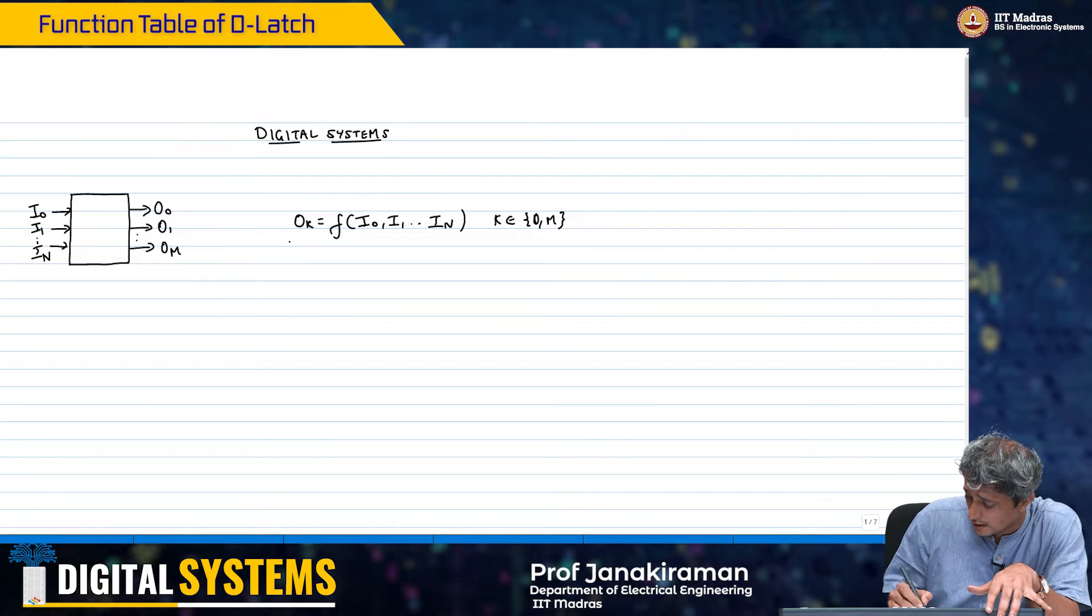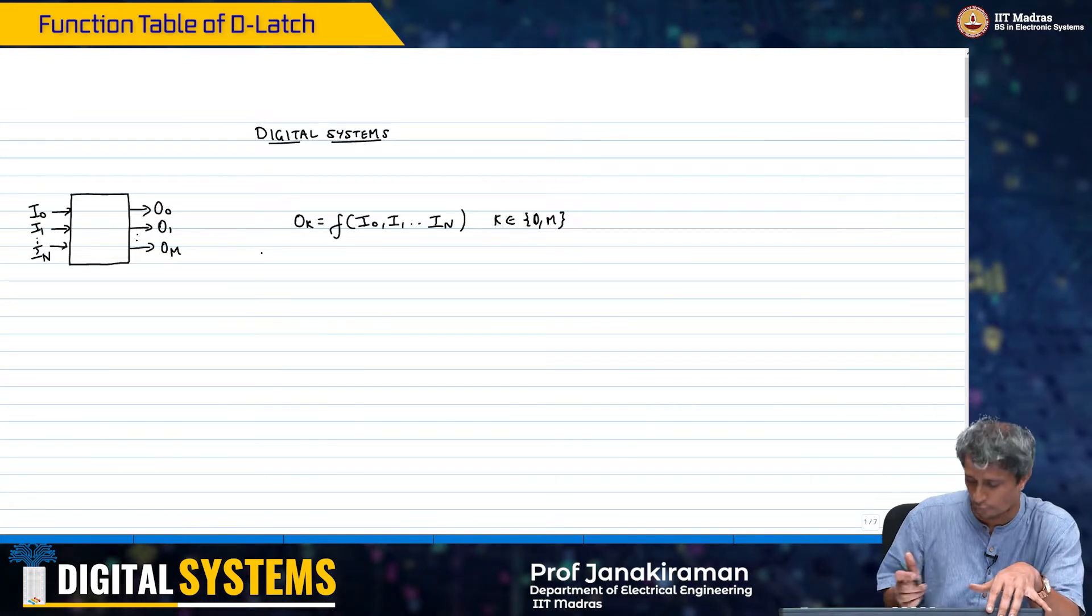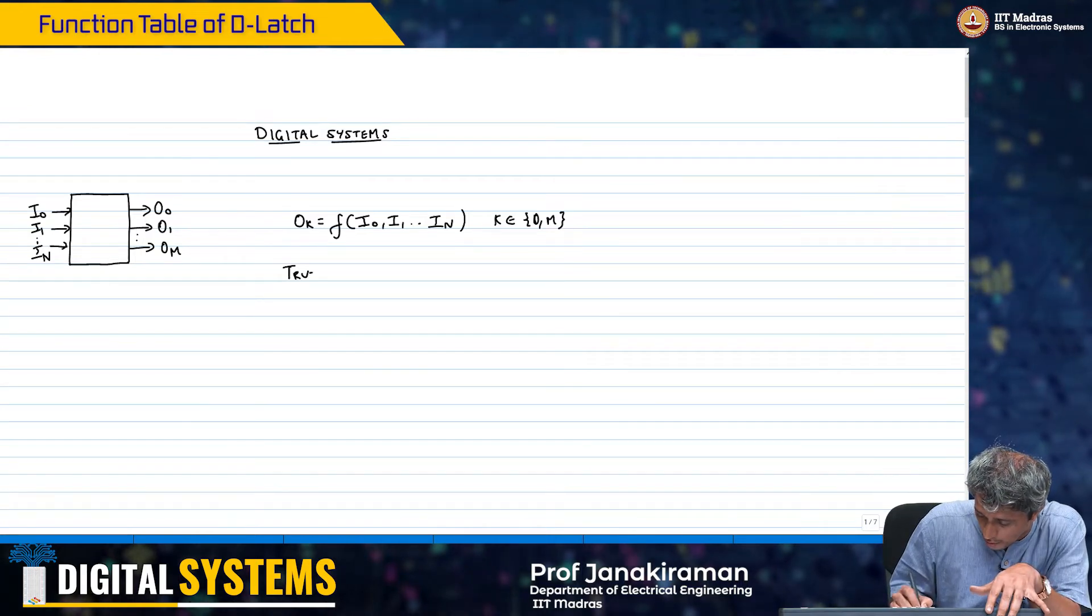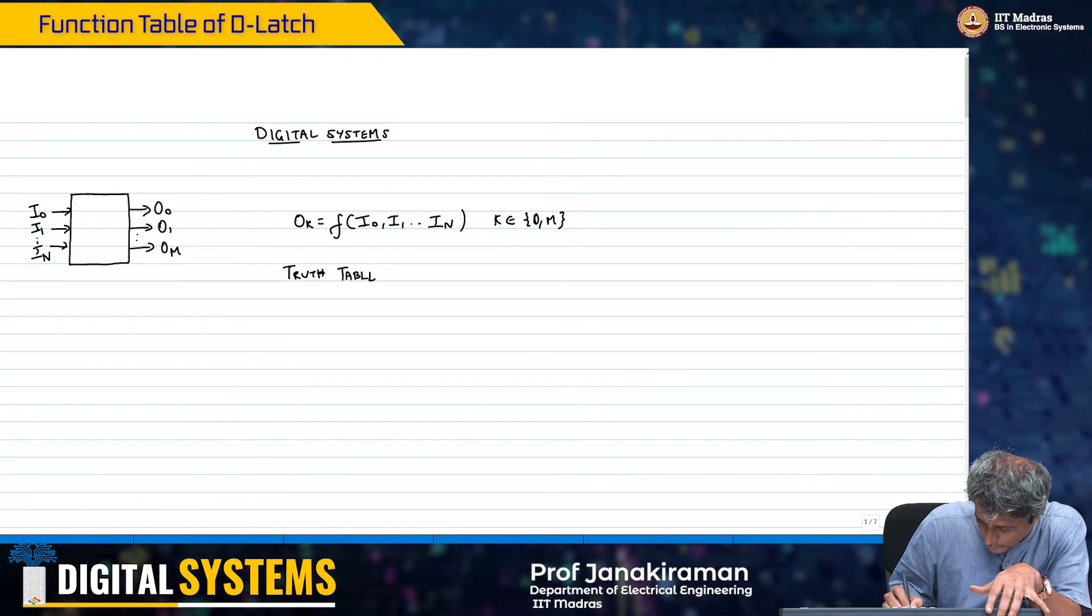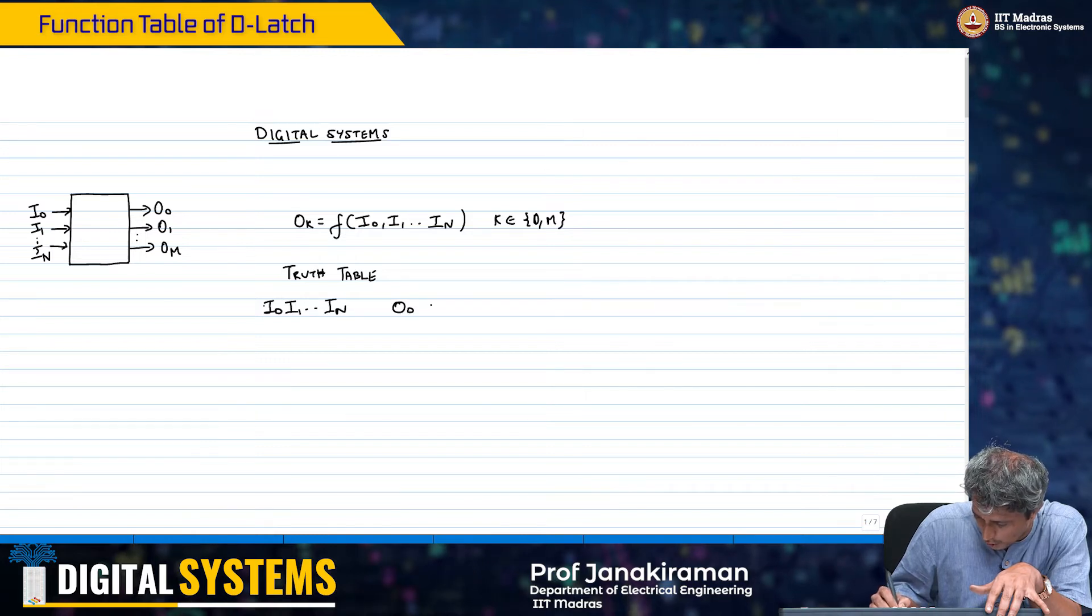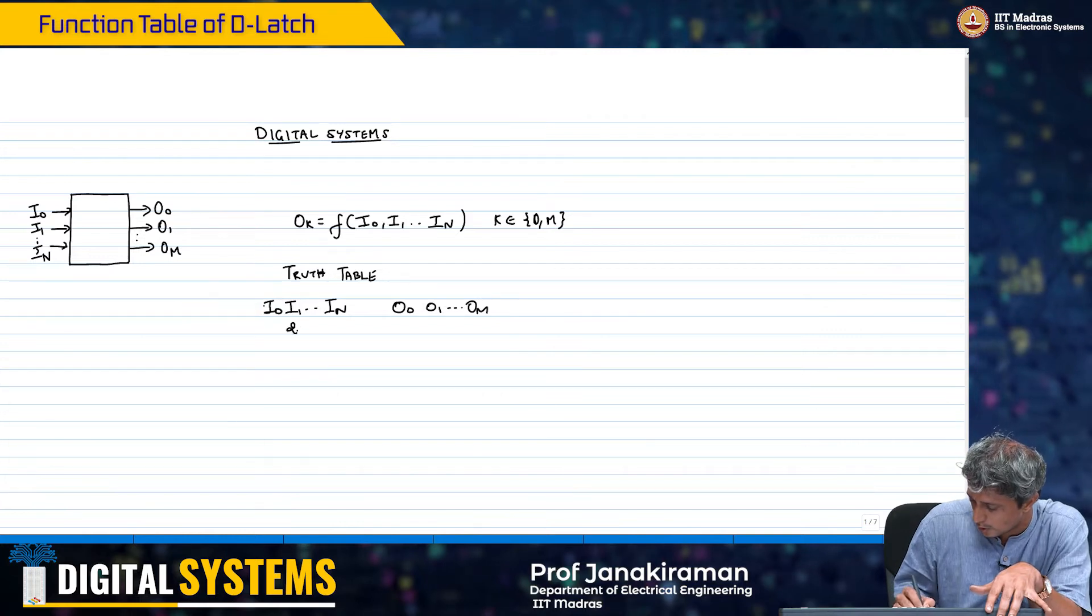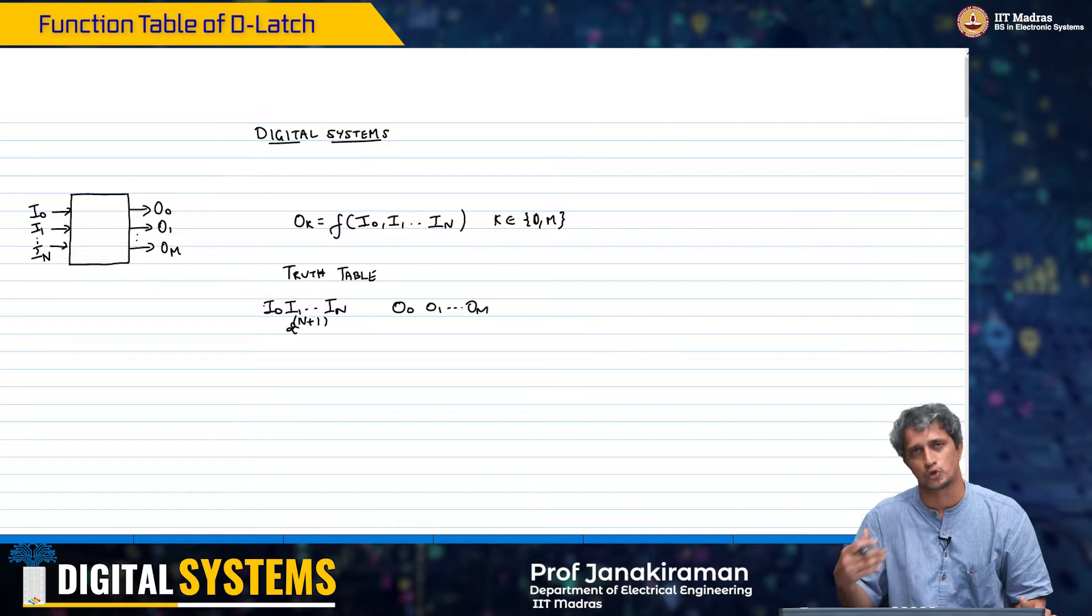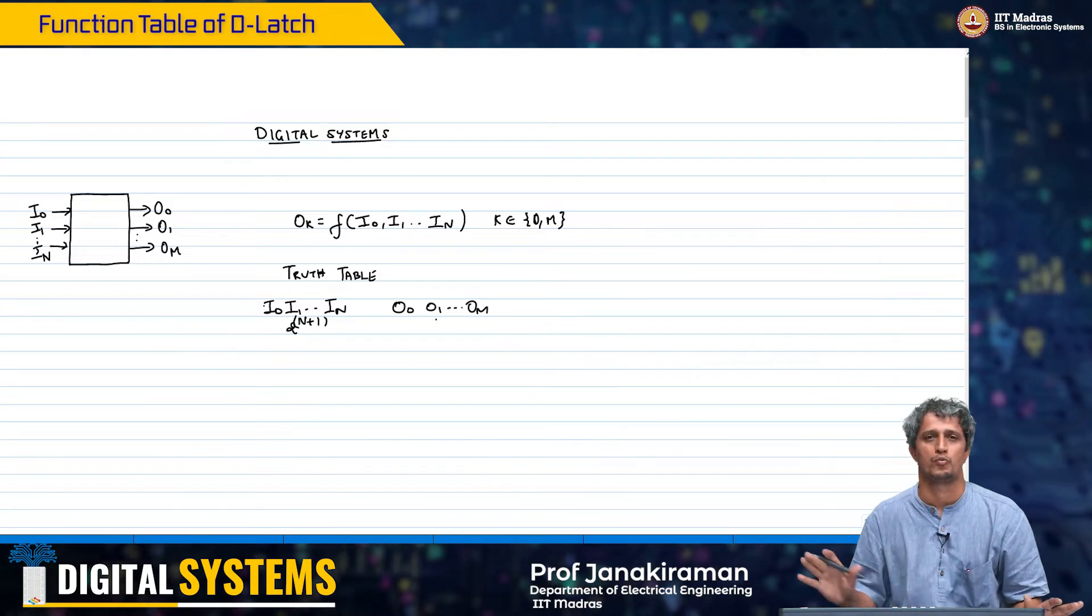When we discussed how to describe the system fully, we said that we could describe it using a truth table. We said inputs I0, I1, In, outputs O0, O1, Om and we just described 2^(n+1) combinations of inputs from all 0s to all 1s and we described the corresponding outputs.